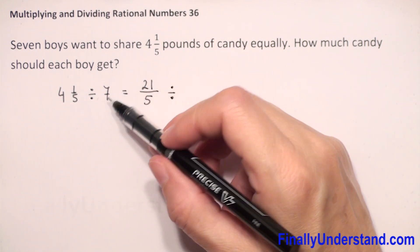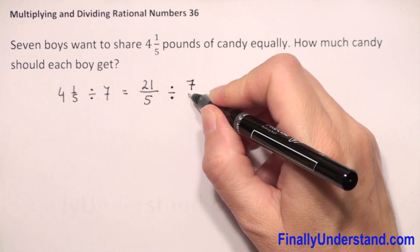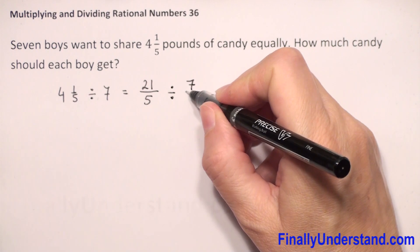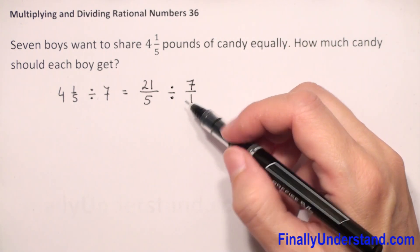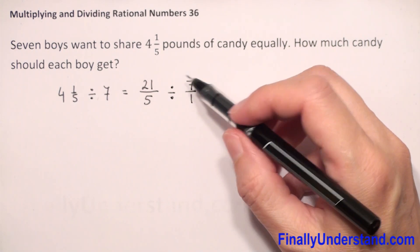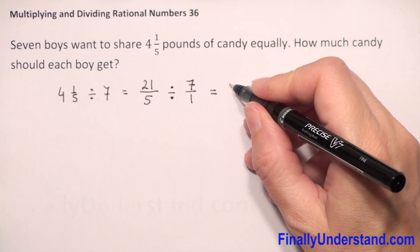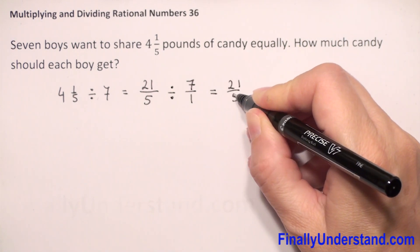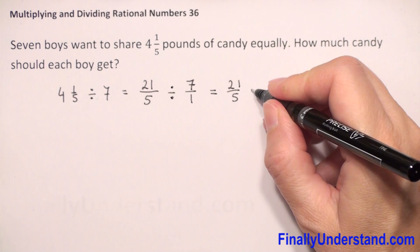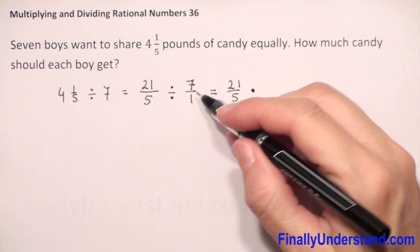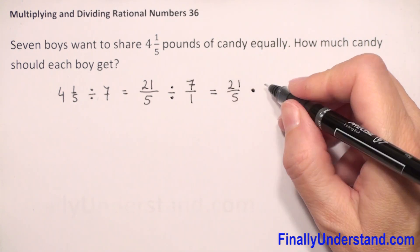We have fractions, so I will change 7 to a fraction also. We just write the whole number over 1. Now when we have division of fractions, we copy the first fraction, change the division sign to multiplication, and flip the second fraction. So 7/1 becomes 1/7.